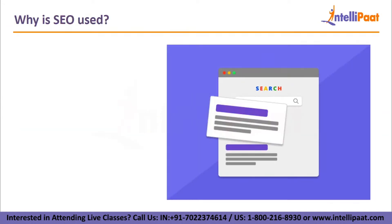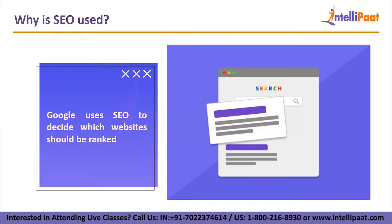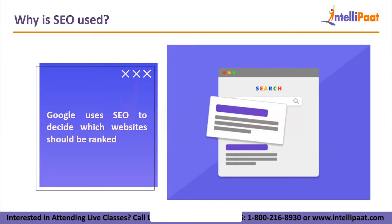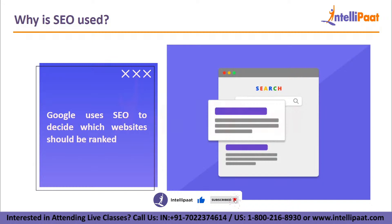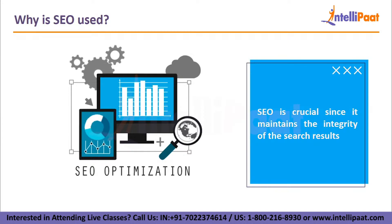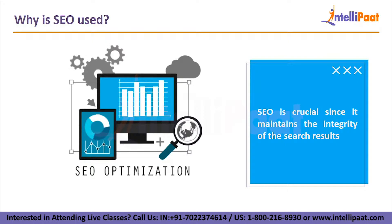Why is SEO used? Google uses SEO, or search engine optimization, to decide which website should be ranked highly for each search phrase submitted into the search engine. Without contemporary SEO, it would be quite simple to rig the search engine results so that the website with the greatest number of links or pages — all of which could be produced by software — consistently appeared at the top. SEO is crucial since it maintains the integrity of the search results. The opportunity to alter these results is minimized to the greatest extent possible, ensuring that the websites that show up for each search are there because they merit it. High search engine rankings are correlated with hard work, so if your website satisfies these requirements, you will have a better chance of appearing in these results.